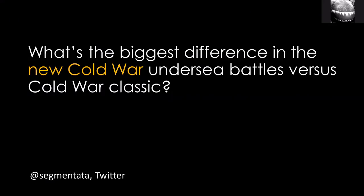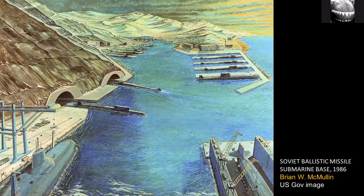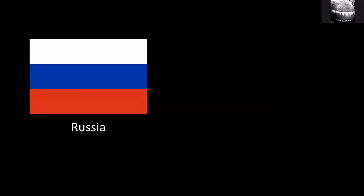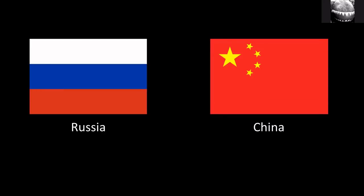So the first question is: what is the biggest difference in the new Cold War undersea battles versus the Cold War classics? I think there are quite a few differences, but let's focus on what's different. The first and really obvious one is the countries — the adversaries to the West, to NATO and its allies. In place of the Soviet Union, we have Russia, which feels like the same adversary essentially, certainly in the submarine context. But we also have China. So where the Cold War is going to be played out in the underwater domain is slightly different to the previous Cold War.